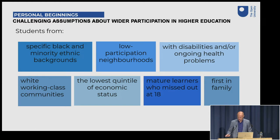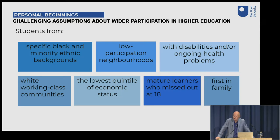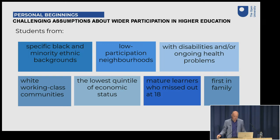I'm going to concentrate on the United Kingdom and start with the Office for Students, England's regulator for higher education. There are seven backgrounds associated with disadvantage. These are backgrounds which will impact on many students' access to higher education, their ability to achieve, and what they go on to do afterwards. We're talking about students from specific Black and minority ethnic backgrounds, from white working-class communities, from low-participation neighbourhoods, the lowest quintile of economic status — which is a euphemism for poor — students with disabilities or ongoing health problems, and first-in-family. And I would argue this is all exacerbated if you happen to be an older learner as well.